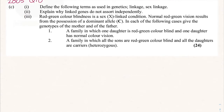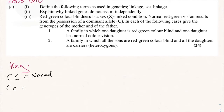Red-green color blindness is a sex-linked condition. Normal red-green vision results from possession of the dominant allele — capital C. Let's do our key: capital C capital C equals normal; capital C lowercase c equals normal as well; and two lowercase c's is colorblind, CB. We'll keep our key to one side and read what's actually being asked.